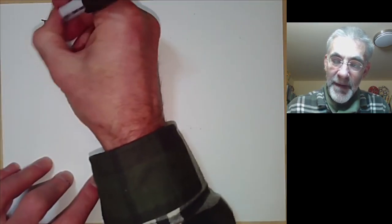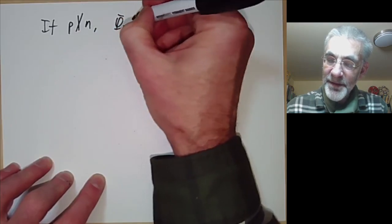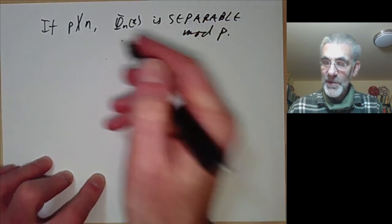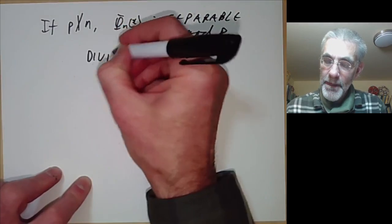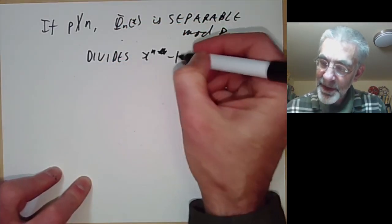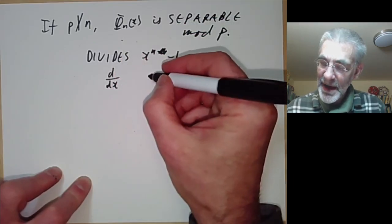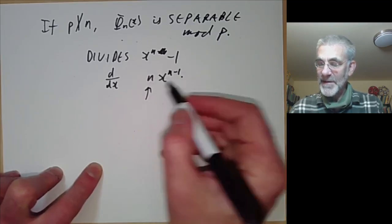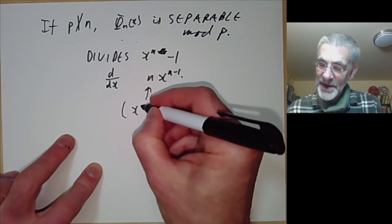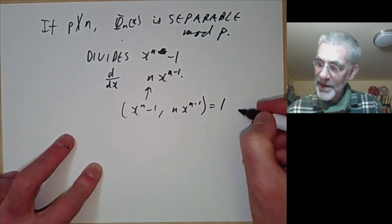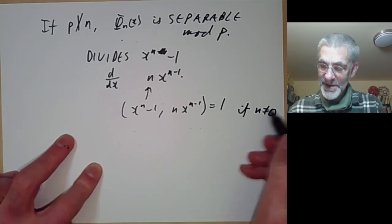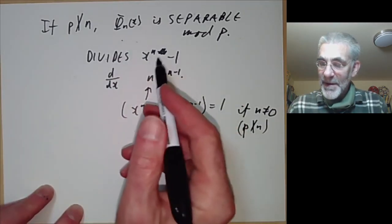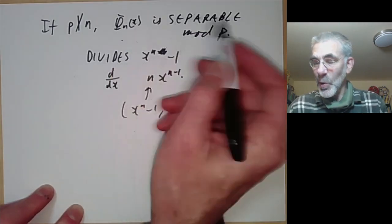To show this, we note that if p does not divide n, then φ_n(x) is separable mod p, i.e., it has no multiple roots. That's because it divides x^n - 1, and the derivative of x^n - 1 is n·x^(n-1). If p does not divide n, we can see the highest common factor of x^n - 1 and its derivative is 1, so all roots of φ_n are distinct mod p.